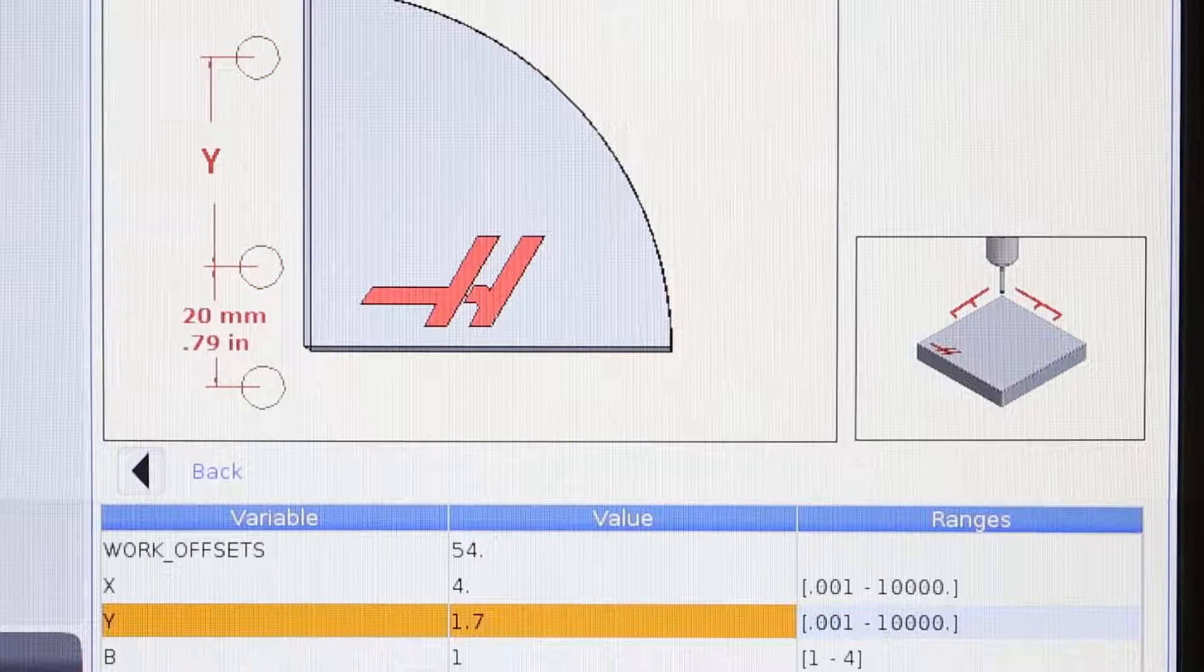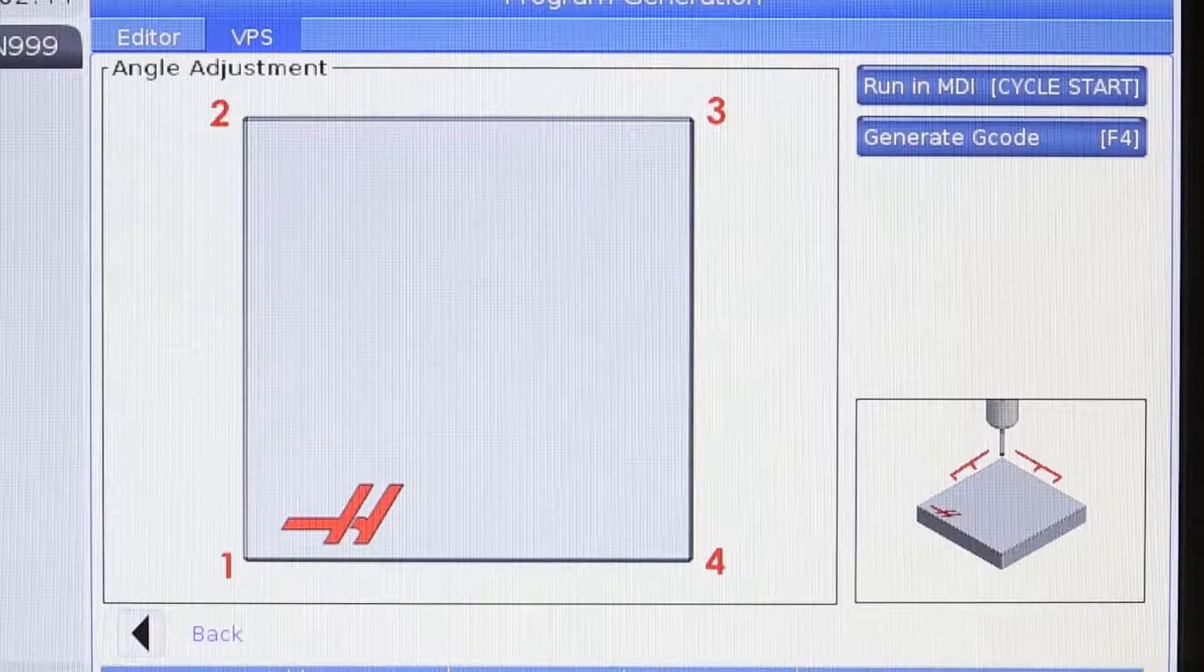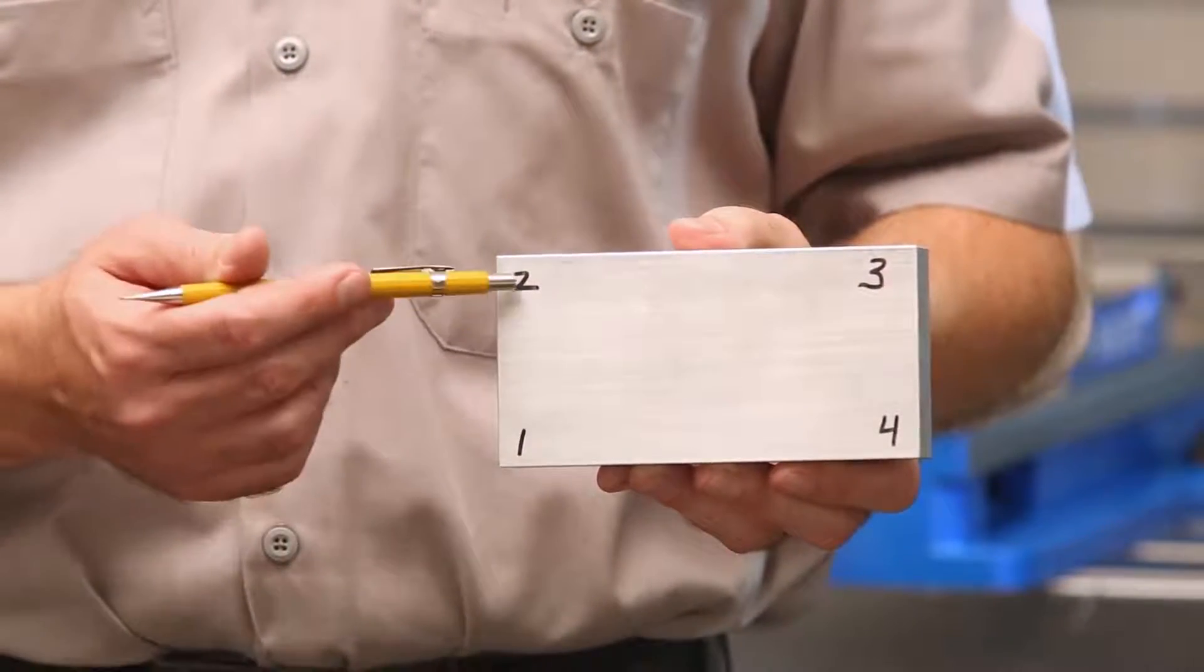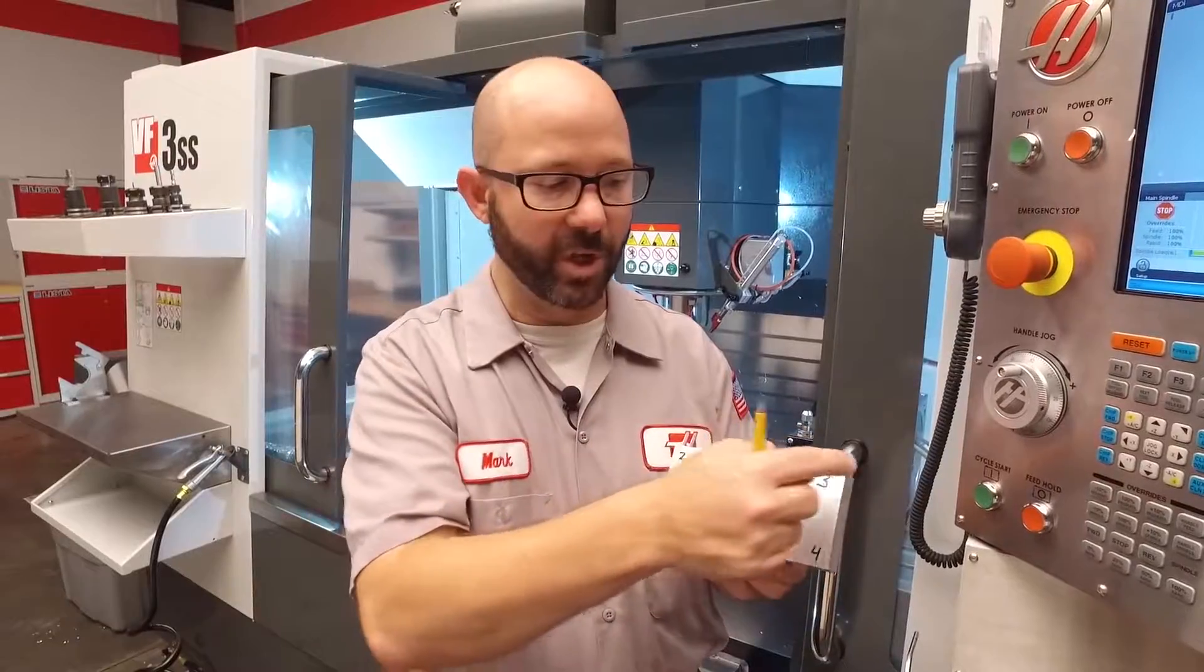Last question, we're almost done here. This is pretty easy. What corner would we like to probe from? Which corner do we want to set as our work offset? We're gonna set this front left corner, corner one. If we were gonna go off this back right corner, we would choose corner number three.